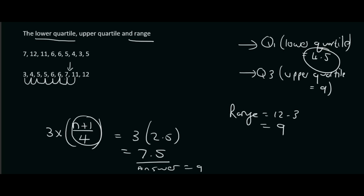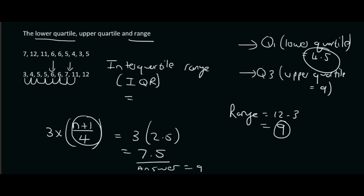So the upper quartile is 9, the lower quartile is 4.5, the middle value is 6, and the range is 9. Finally, your teacher might ask you to work out the interquartile range, or IQR. That's the range of the quartile values: Q3 minus Q1. So that's 9 minus 4.5, which equals 4.5.